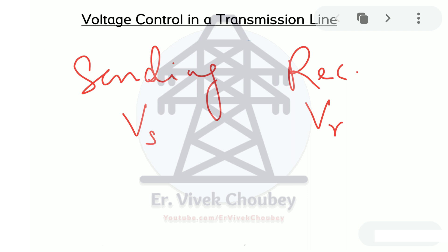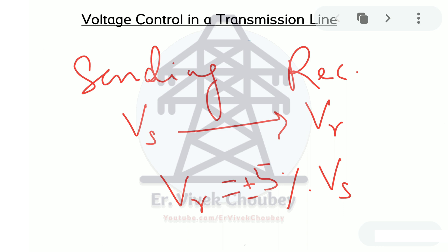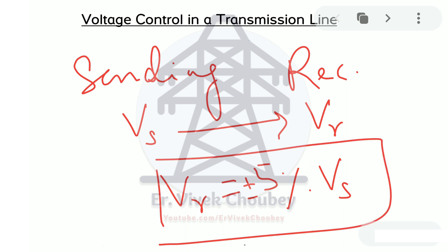The second question is: what do we mean by voltage control? From sending end to receiving end, this voltage either rises or goes down, depending upon the load or line impedance. The allowable range of the receiving end voltage is plus or minus 5% of the sending end voltage. In this video we will see what techniques we use to control the voltage profile so that it doesn't go beyond this limit.